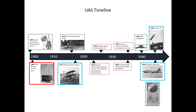In Madison Square Garden, at the electrical exhibition of 1898, Tesla demonstrated a radio-controlled boat. Tesla's boat used several large batteries for power and radio signals controlled the vessel. This is the first recorded instance where radio signals were used to control a vehicle.